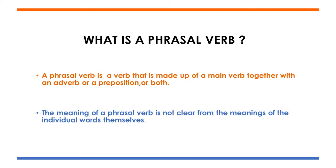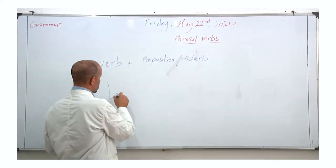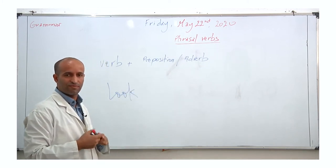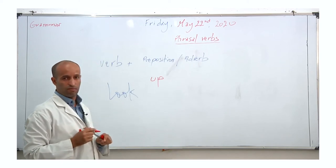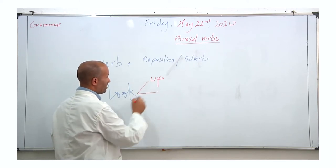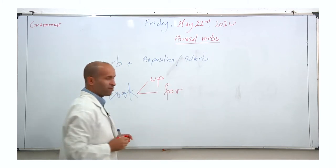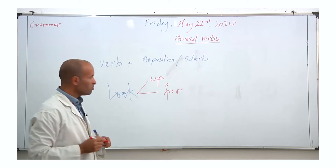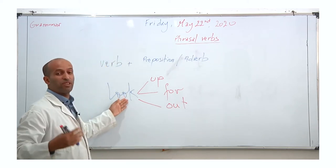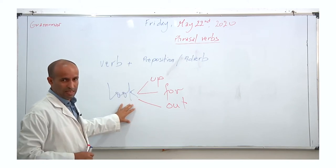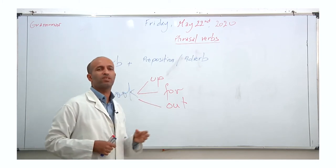The meaning of a phrasal verb is not clear from the meanings of the individual words themselves. For example, let's take the verb 'to look.' This is the main verb. If I add a preposition like 'up,' or I can add 'for' or 'out,' so here we have three phrasal verbs. They have different meanings, and to understand them, we need to read these verbs in context.